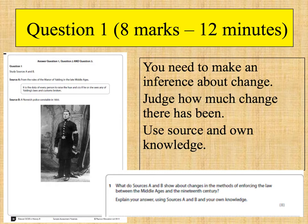Let's go through the different types of questions on the Crime and Punishment exam. Question 1 is worth 8 marks, and you should spend around 12 minutes on it. To find out how long to spend on each question, times the number of marks by one and a half — that tells you how many minutes to spend.